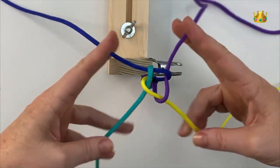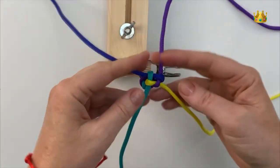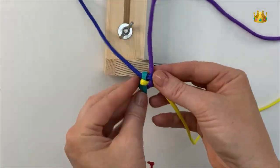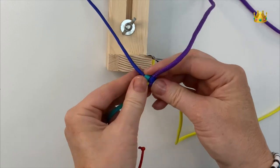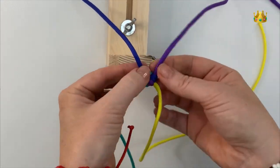Now you can pull all your threads nice and tight to pull your box knot tight. Now you can work your threads a little bit just pulling them tight so you've got a nice even box knot.